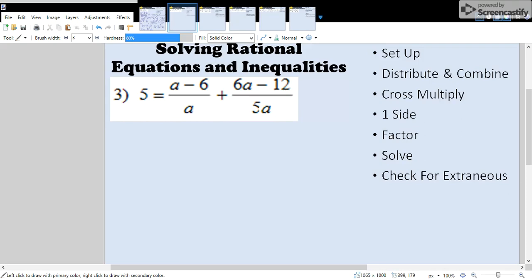So a and 5a, the least common multiple would be 5a. We could just leave the second fraction alone. And the first one, we could multiply by 5 on both the top and the bottom to get our common denominator. Once we distribute the 5 and write those out, we should get this. So we're done with step one.